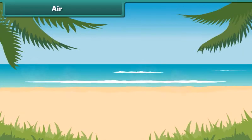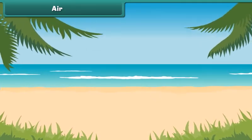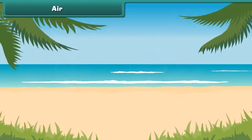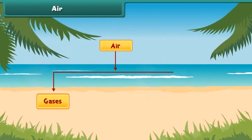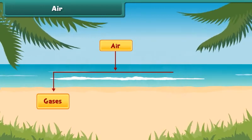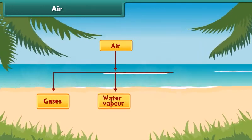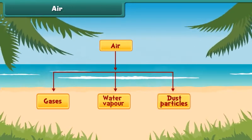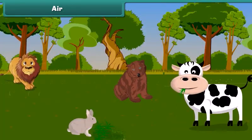At first, let's talk about air. Air, as we know, is present around us everywhere. It contains gases, water particles which are also called water vapors, and dust particles. Animals and plants breathe air to live.